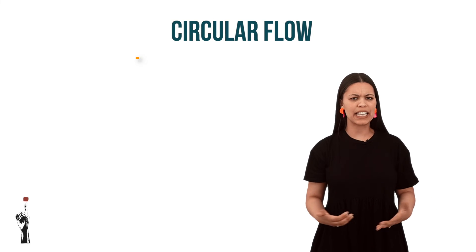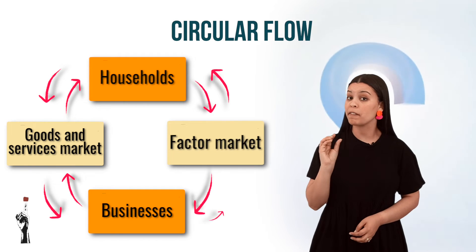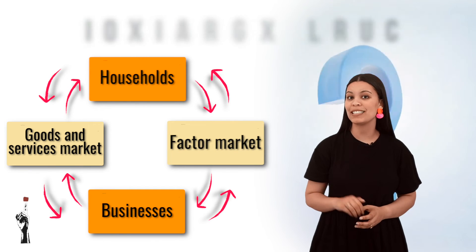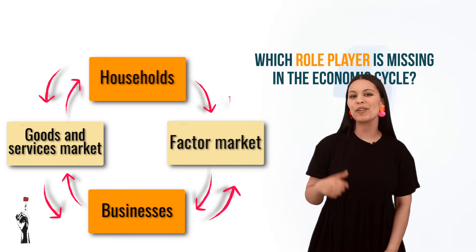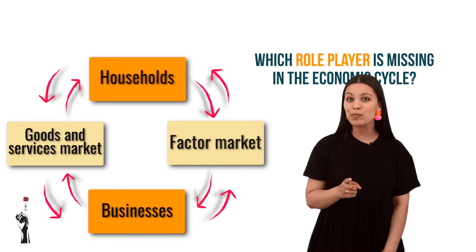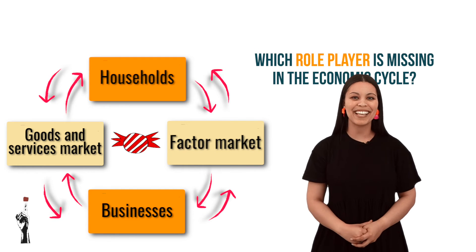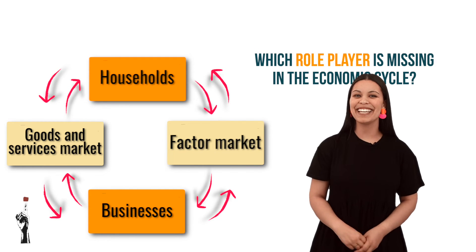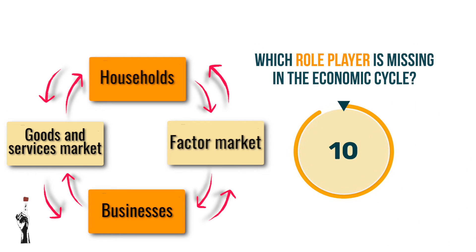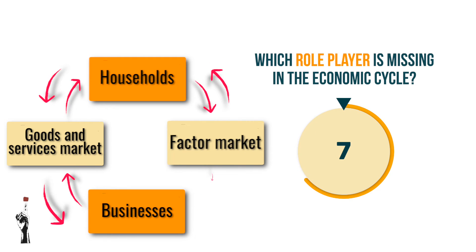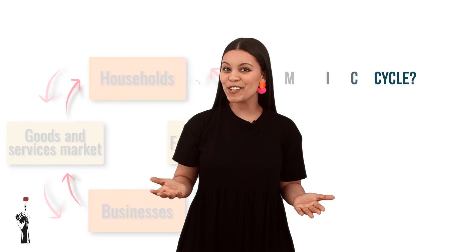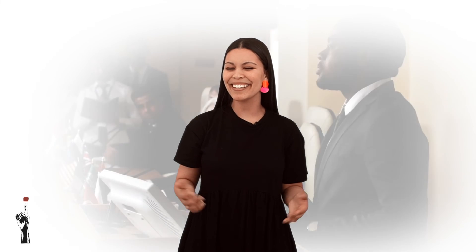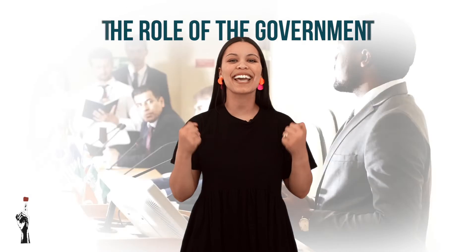Grade 9s, if we look at the circular flow, it seems that there is a very important party missing. Can you guess who this is? We'll put the timer up and see if you get it right. The first person to get it right will get a sweetie from their teacher. Three, two, one. Could you guess who this party is? I'm sure you did — it is the government.